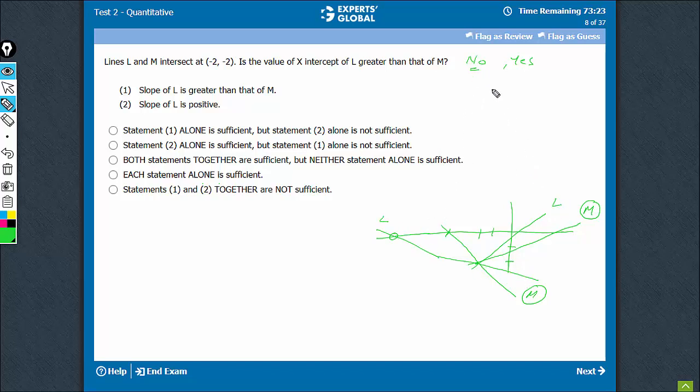But in this peculiar case where L has a positive slope and M has a negative slope, we are getting yes as well. We are getting no as well as yes. So statement 1 is not sufficient. Look at statement 2 now.